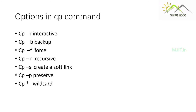CP -r will recursively copy files. For example, if a directory has files a, b, c, d, and e, you don't need to copy each file one by one. You can use CP -r with your source directory and destination directory, and it will copy all files inside the source directory to your destination location.